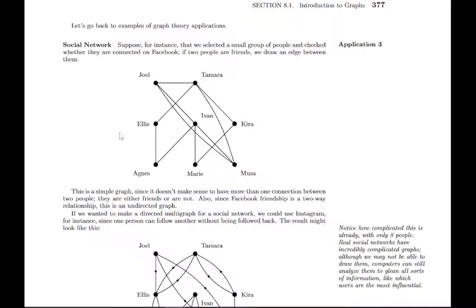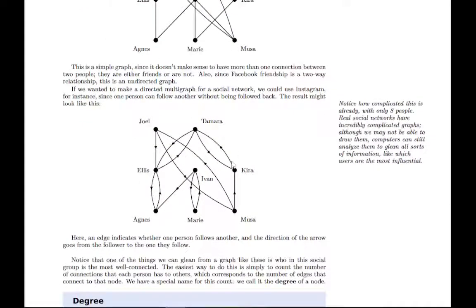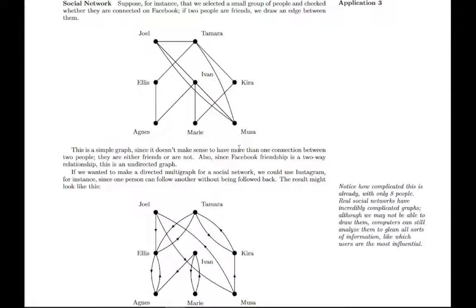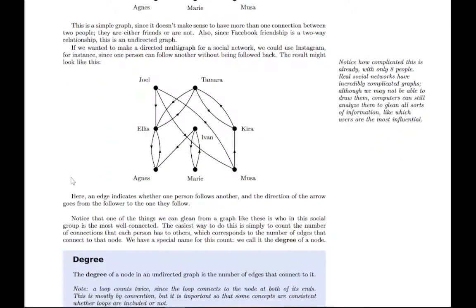Going back to the application of social networks, here's an example with some people connected on Facebook and them following each other on Instagram with directed arrows. Notice that already with eight people it's starting to look really complicated. Real social networks that have thousands or millions or billions of people, the graphs are incredibly complicated and hard to draw. But computers can still analyze them to pick out important information like who is the center of a social group or how one social group is connected to another.